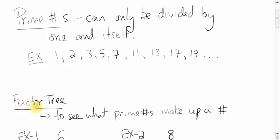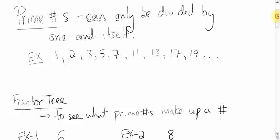To do this, we make what's called factor trees. A factor tree is used to see what prime factors — or prime numbers — make up another number, meaning what prime numbers go into or evenly divide another number.